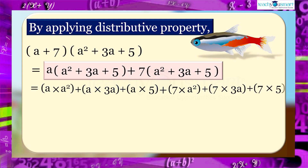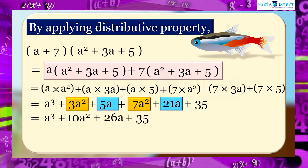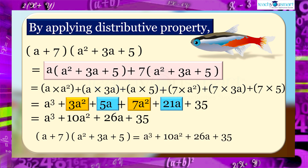Plus 7 multiplied by 5, equals a³ + 3a² + 5a + 7a² + 21a + 35. Adding like terms, we get a³ + 10a² + 26a + 35. Therefore, (a + 7) multiplied by (a² + 3a + 5) equals a³ + 10a² + 26a + 35.